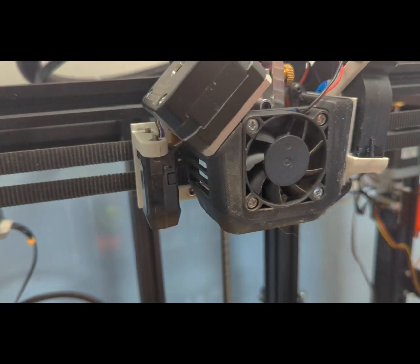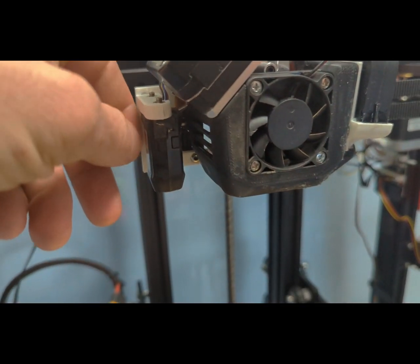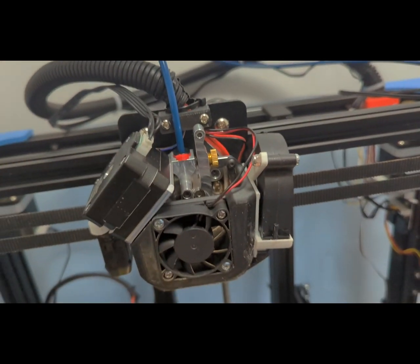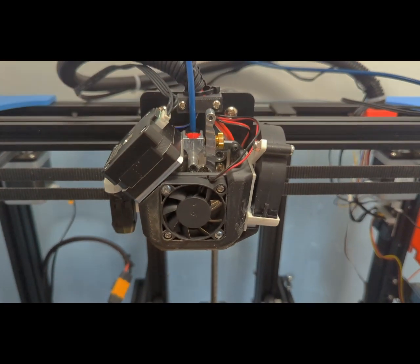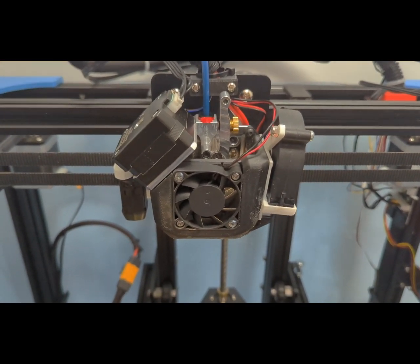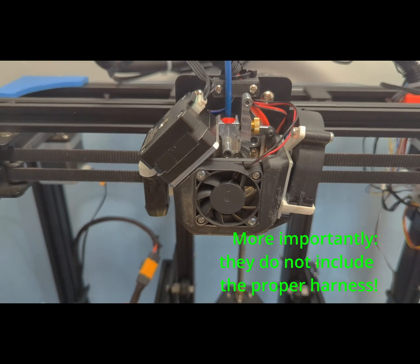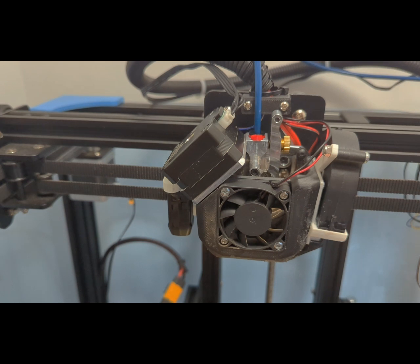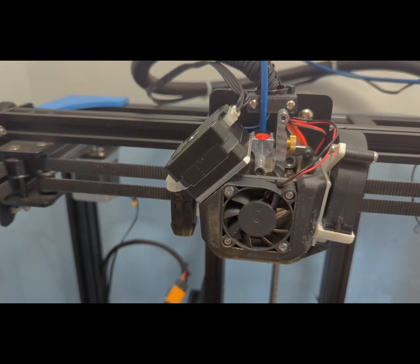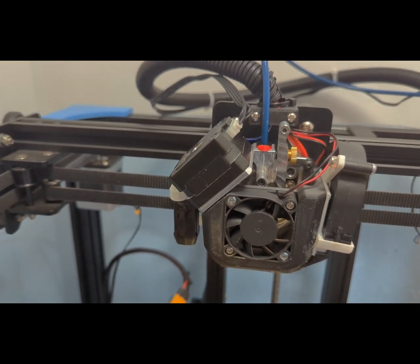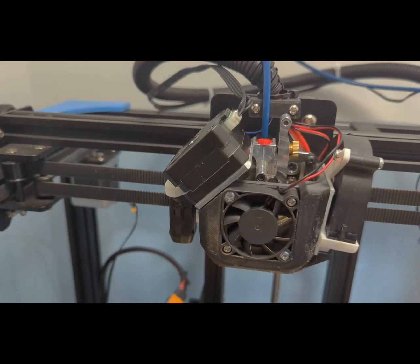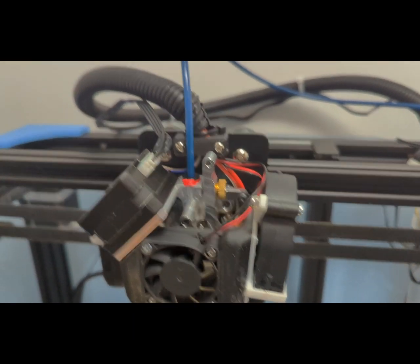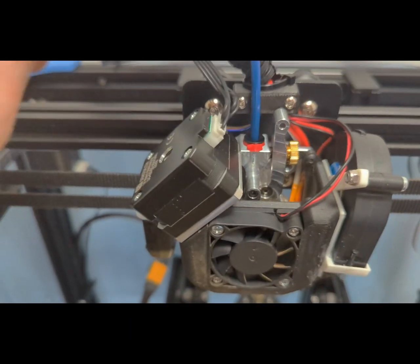And then I also installed a CR-Touch. Again, not necessarily the Ender 6 itself. Creality, when you buy those kits, doesn't even include a bracket that fits on the original hotend. And Micro Swiss has a few available with the other kits, you know, for the Ender 3 and things like that, but they don't have one for the Ender 6.